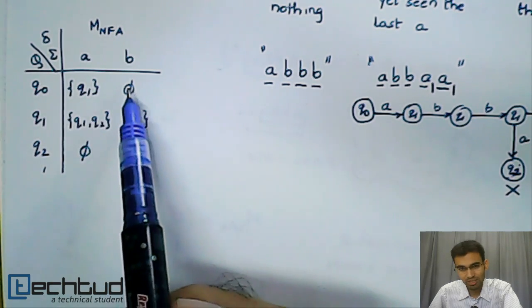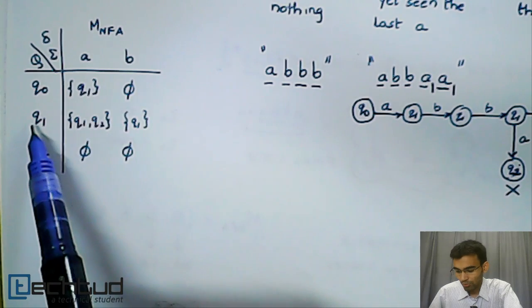On a B from Q0, there is no next state, so the empty set phi.